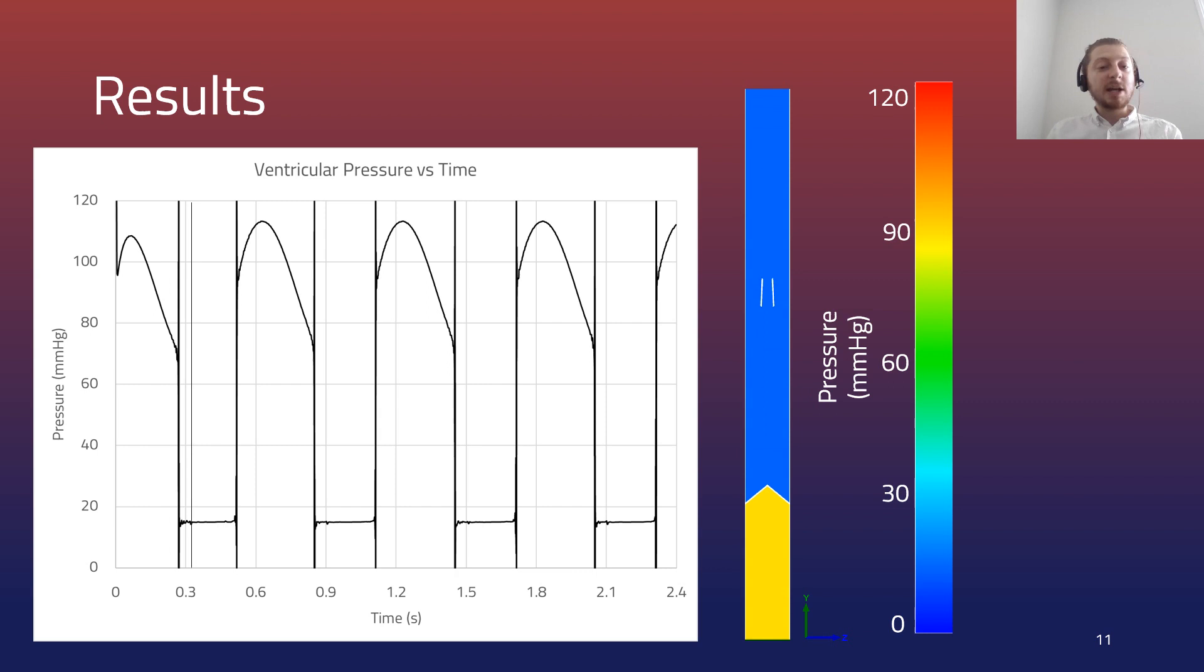Regarding the pressures within the model, the space between the two valves was approximated as the ventricle, and the ventricular pressure was measured throughout the simulation time. The windkessel model caused a peak systolic pressure of 110 millimeters of mercury as the atrioventricular valve moved downwards. Once the semilunar valve closed and the atrioventricular valve opened, the ventricular pressure dropped down to pressures seen in the atria equal to the inlet pressure boundary of 15 millimeters of mercury.